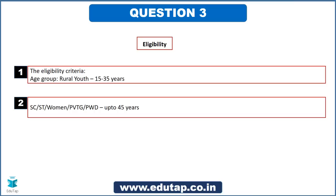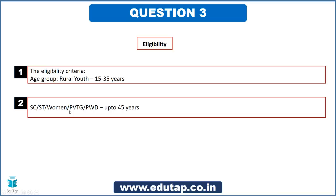Regarding eligibility: the scheme targets rural youth in the age group of 15 to 35 years. There is also a relaxation in age for SC/ST women and tribal groups — particularly vulnerable tribal groups — and persons with disabilities, for whom the age bracket is extended up to 45 years. In the question, check whether they ask for the general criteria or specifically for these sections like SC/ST women, as both can be tested.